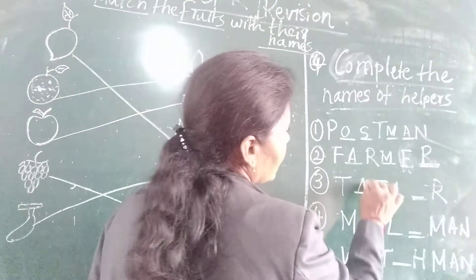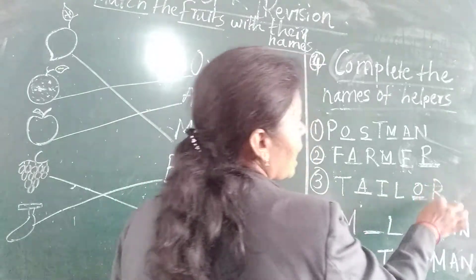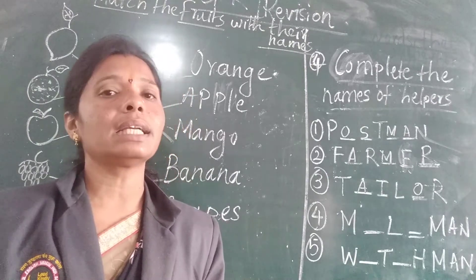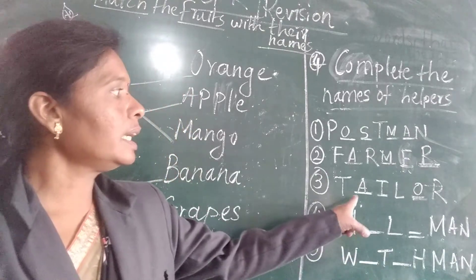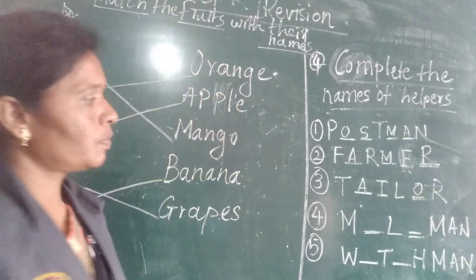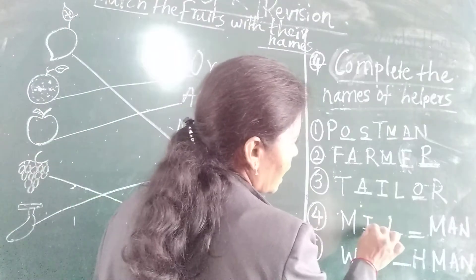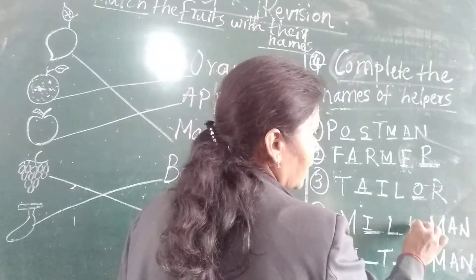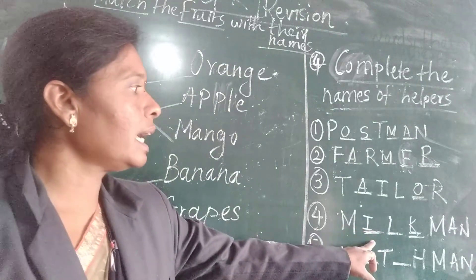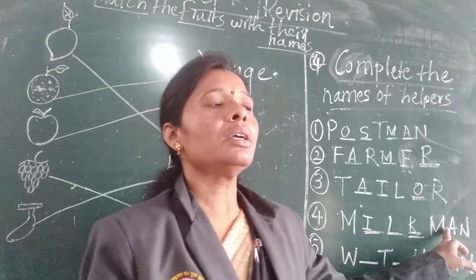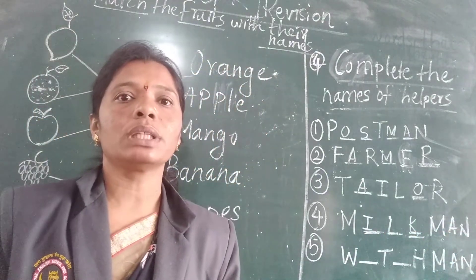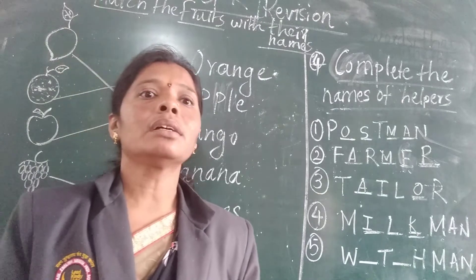T-A-I-L-O-R tailor. Tailor means the one who stitches our clothes — we call that a tailor. T-A-I-L-O-R tailor. M-I-L-K-M-A-N milkman. M-I-L-K-M-E-N milkman. The one who gives us milk — we call that person milkman.